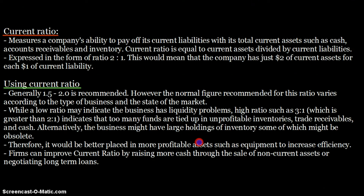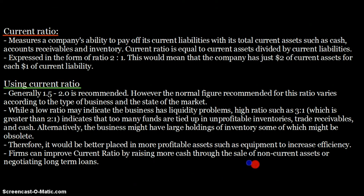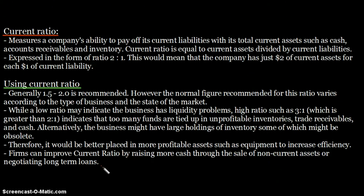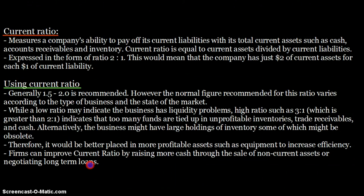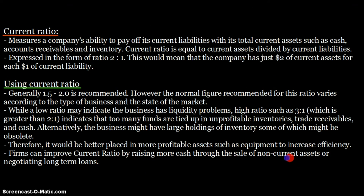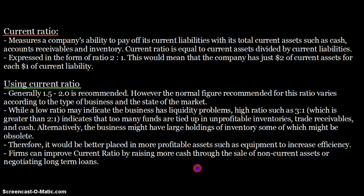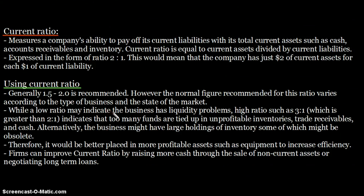Firms can improve their current ratio by raising more cash through the sale of non-current assets, or by negotiating long-term loans. Long-term loans improve the ratio because the cash is in hand but the repayment is due after more than one year, so it is not included in current liabilities — it goes into non-current liabilities. Selling non-current assets brings cash in hand, which is a current asset, thereby improving the current ratio.